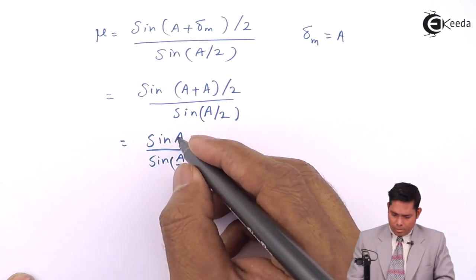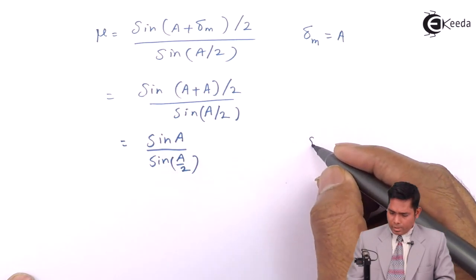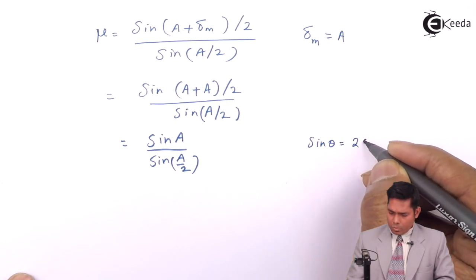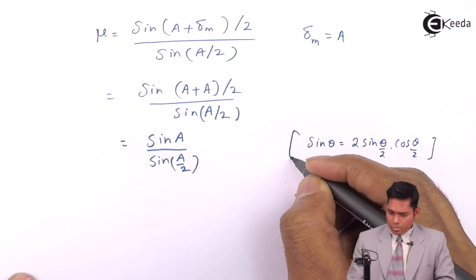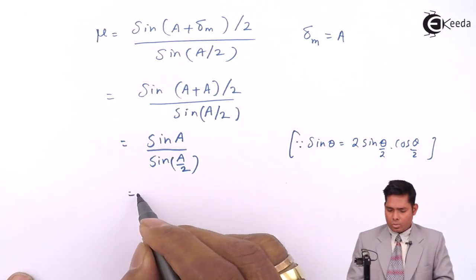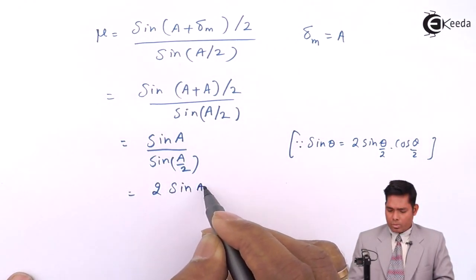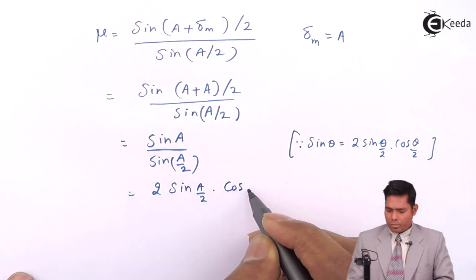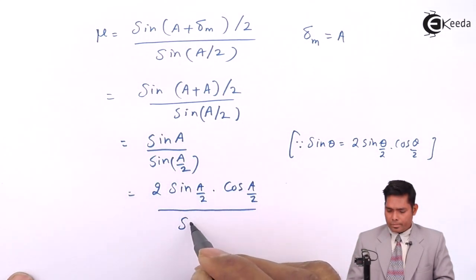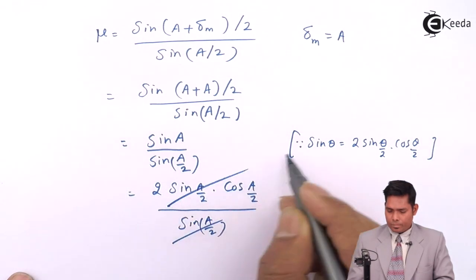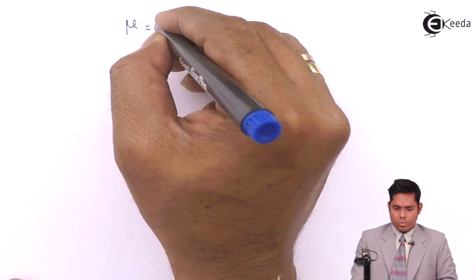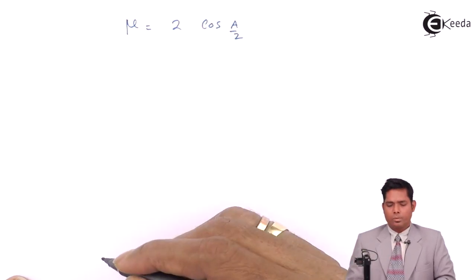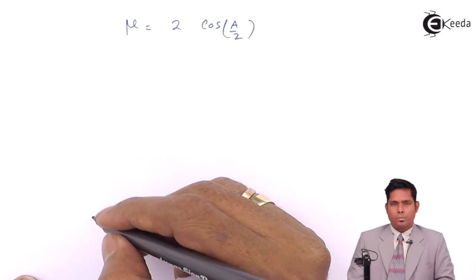Now I will write this because sine theta equals 2 sine theta by 2 into cos theta by 2, which I will use here. This is 2 sine theta by 2 into cos theta by 2 divided by sine A by 2.